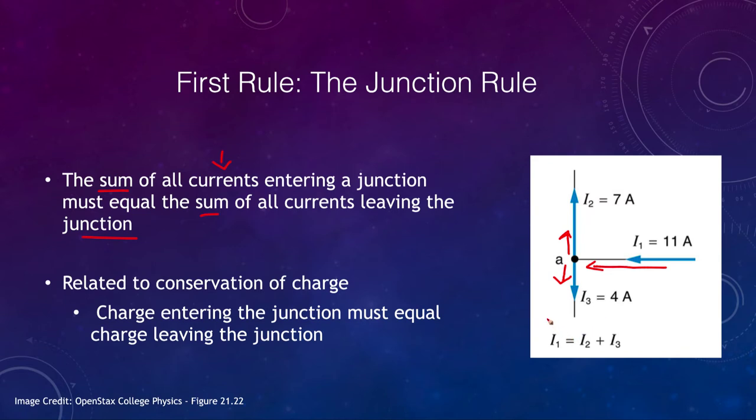So here we see that I1, which was 11 amps, is equal to I2, which was 7 amps, plus I3, which was 4 amps. So since 11 is equal to 7 plus 4, Kirchhoff's first rule is satisfied here. So you can imagine, where would the current go otherwise? A certain amount of current is coming in, it has to go out and split up, and be equal.